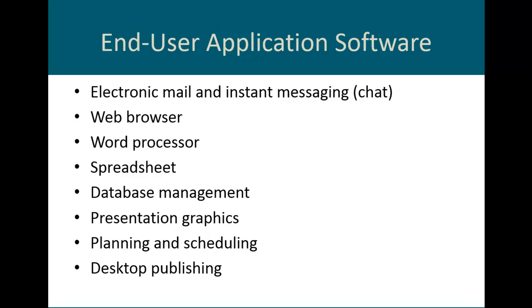Then we have desktop publishing — software that combines the features of a word processor and a graphics program. This software enables users to design, lay out, and prepare high-quality brochures, newsletters, and different manuals in-house using desktop publishing software instead of having it done by a professional company. An example is Microsoft Publisher, which is a pretty simple but very powerful program that can meet desktop publishing needs in an organization.